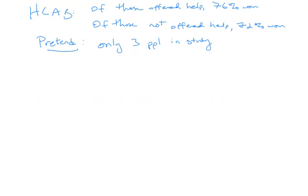Suppose there's only three people in the study. What information do we have about each of those people? We know whether they won their case, and we know which group they were in. We'll write down their outcomes — zero means lose and one means win. So the first person has a zero, so the first person lost their case. The second person has a zero, so they also lost. The third person has a one, so they won their case.